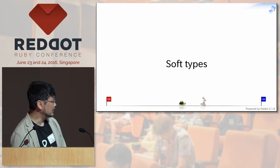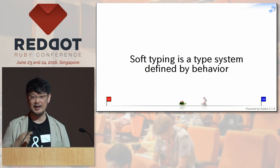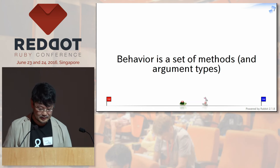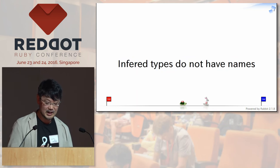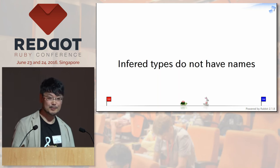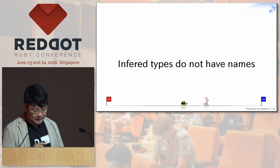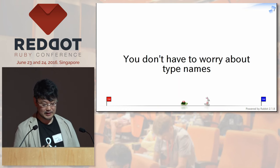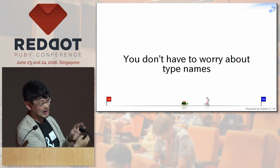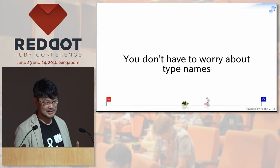Soft typing is a type system defined by behavior. A type is defined by a set of methods and their argument types. Inferred types don't have names. Many people, including those in the static typing camp, tend to define classes with a name — but you don't have to worry about type names. I want to express the type of this argument without having to name it. You can generate anonymous interfaces. You don't have to worry about names — making up a proper name is a pretty heavy task in programming.